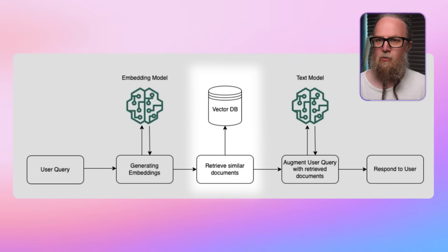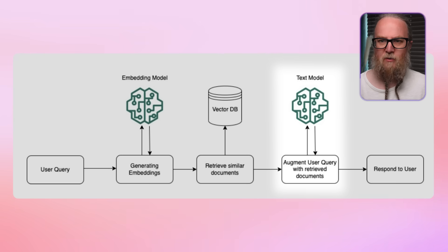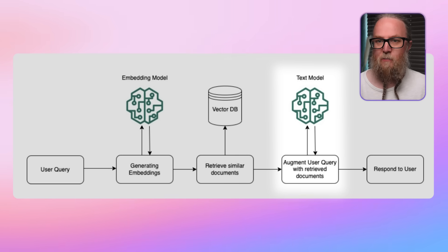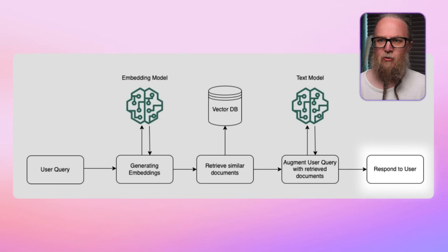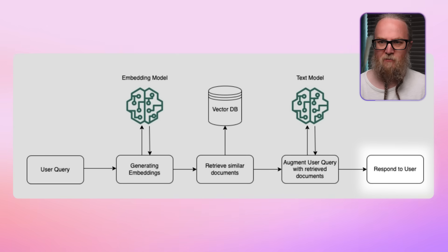That comparison identifies the most semantically similar chunks from the knowledge base. After this, we move on to prompt augmentation — the retrieved chunks, which are provided with additional context, relate to the user's query and are appended to the original user prompt. The next step is response generation, where this augmented prompt is passed to the foundational model, or FM, to generate a response. By incorporating the relevant data from the knowledge base, the model's output is informed by the organization's proprietary information.